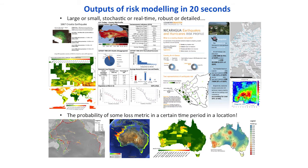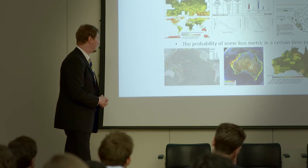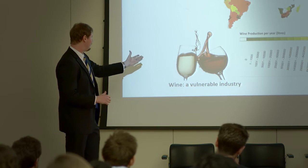There are lots of complex outputs of risk modelling, but really at the end of the day there's one key component that we look at. We look at the probability — say 99% — of some loss metric, say wine spillage, in a certain time period, say the next five seconds, in a location, maybe off the coast of Chile. And sure enough, it happened.